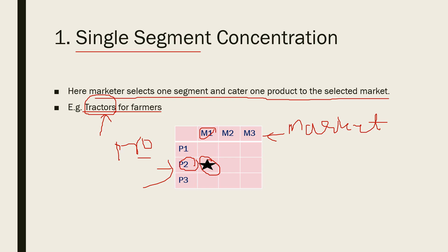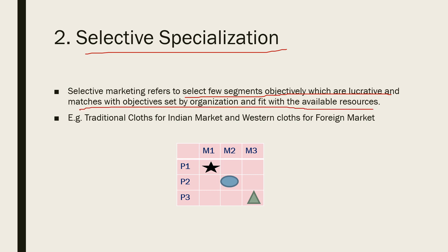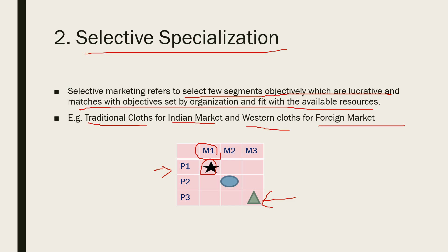Next is selective specialization, which refers to selecting a few segments objectively — ones that are lucrative, match the organization's objectives, and fit available resources. In simple words, you produce more than two products — P1, P2, P3 — each for a different market. For example, traditional clothes for the Indian market and western clothes for foreign markets.